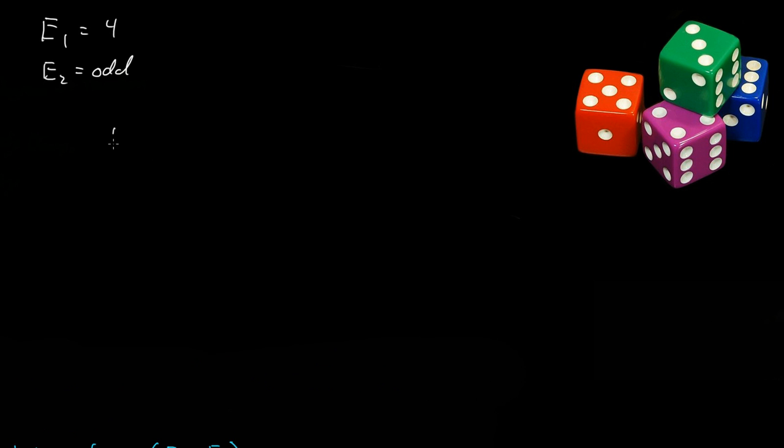So if we were to draw a Venn diagram, we'd have our evens, so maybe two, four, and six, and our odds on the outside, one, three, and five.